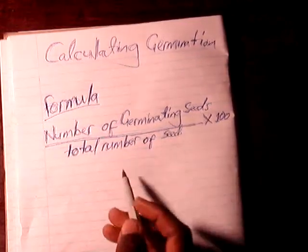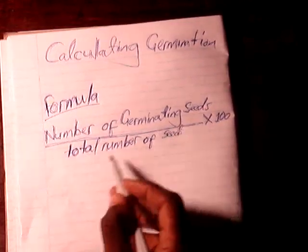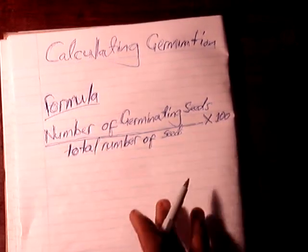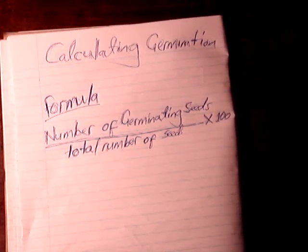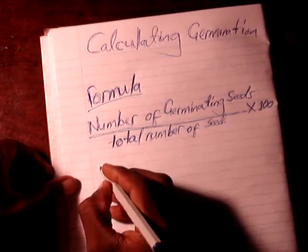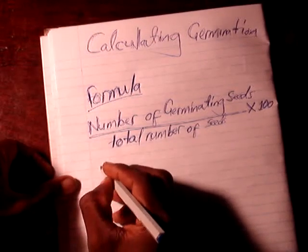Our formula for germination is: number of seeds that are germinating over total number of seeds, times 100. That is, number of germinating seeds over total number of seeds, times 100. The 100 gives us a percentage.